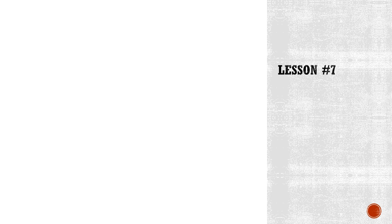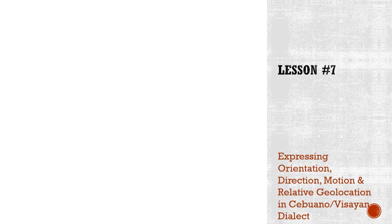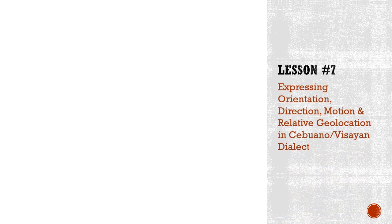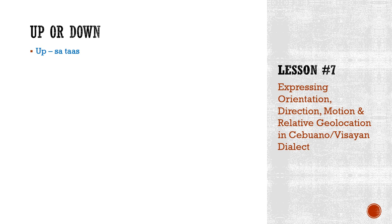Now let's continue with more. We have up or down. How do we say up and how do we say down? When we say up, we just say taas. If I point up, I would say sa taas.